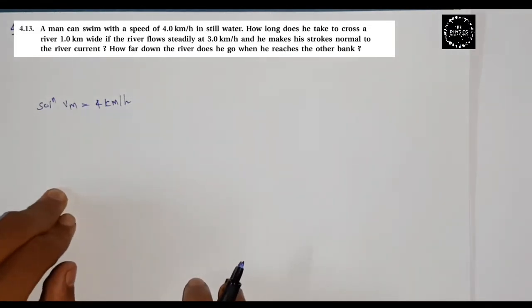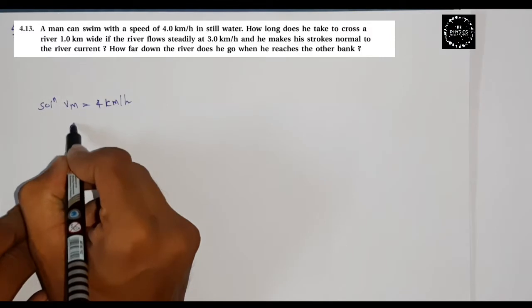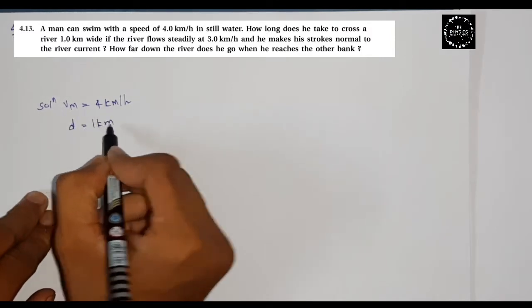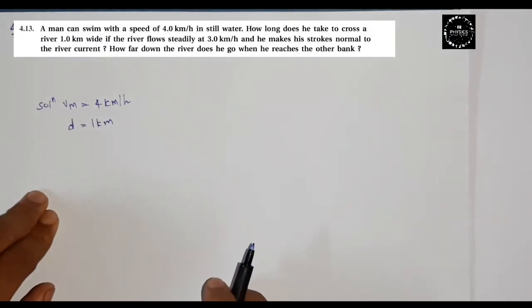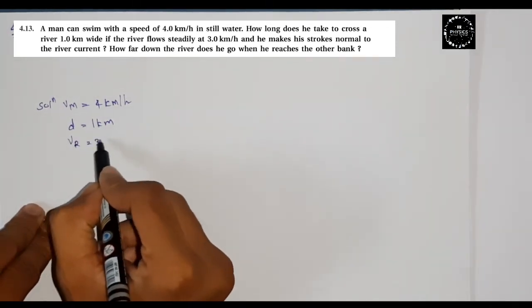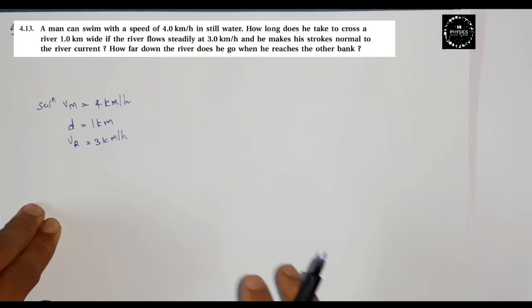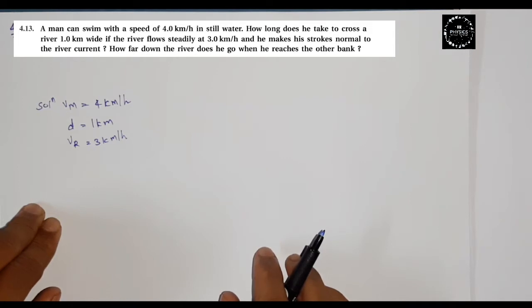In still water, how long does he take to cross the river one kilometer wide? The distance is one kilometer wide. If the river flows at a speed of 3 kilometers per hour, the river speed Vr is 3 kilometers per hour, and he makes his strokes normal to the river current.